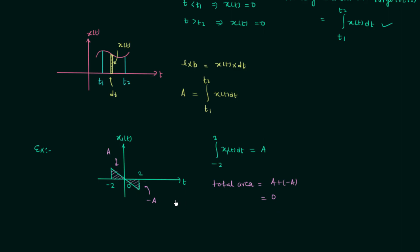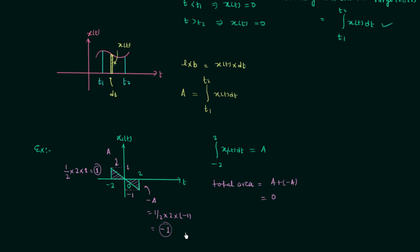The area is equal to zero. Area A is the area of this triangle, and we know the area of a triangle is half base into altitude. The base is 2 (from 0 to minus 2) and the altitude is 1, giving area A equal to 1. For the other triangle, the base is again 2 but the altitude is minus 1, so the area is minus 1. Therefore 1 plus minus 1 equals zero. Whenever you have a waveform like this, you can directly write the area as zero without performing the integration.